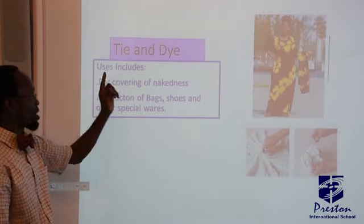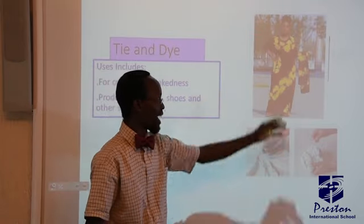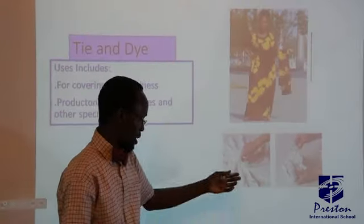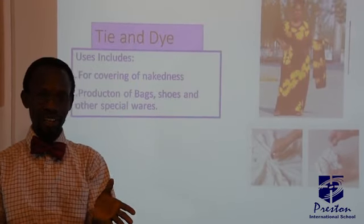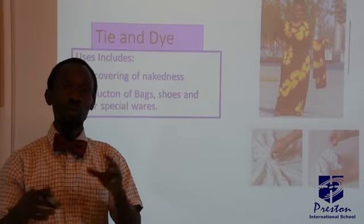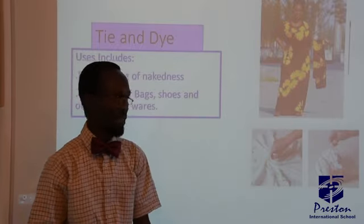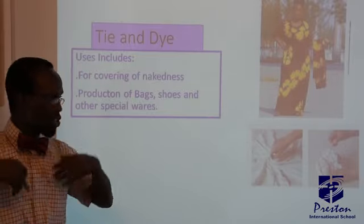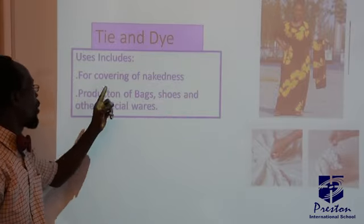Now the uses of tie-and-die: look at this beautiful young woman — see what she's wearing, how it feels. The body is not exposed and it enhances her beauty. For the covering of nakedness — a lot of modernization has led men and women to expose their bodies — but this fine tie-and-die covers the body. That is the basic importance of tie-and-die, along with the production of bags, shoes, and other special wares.